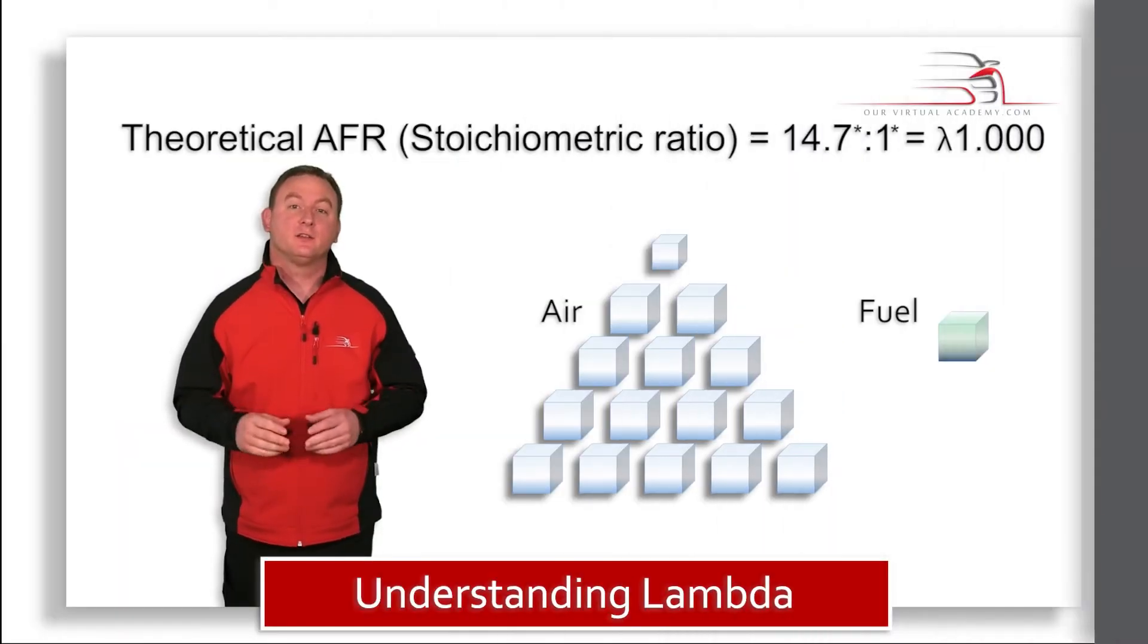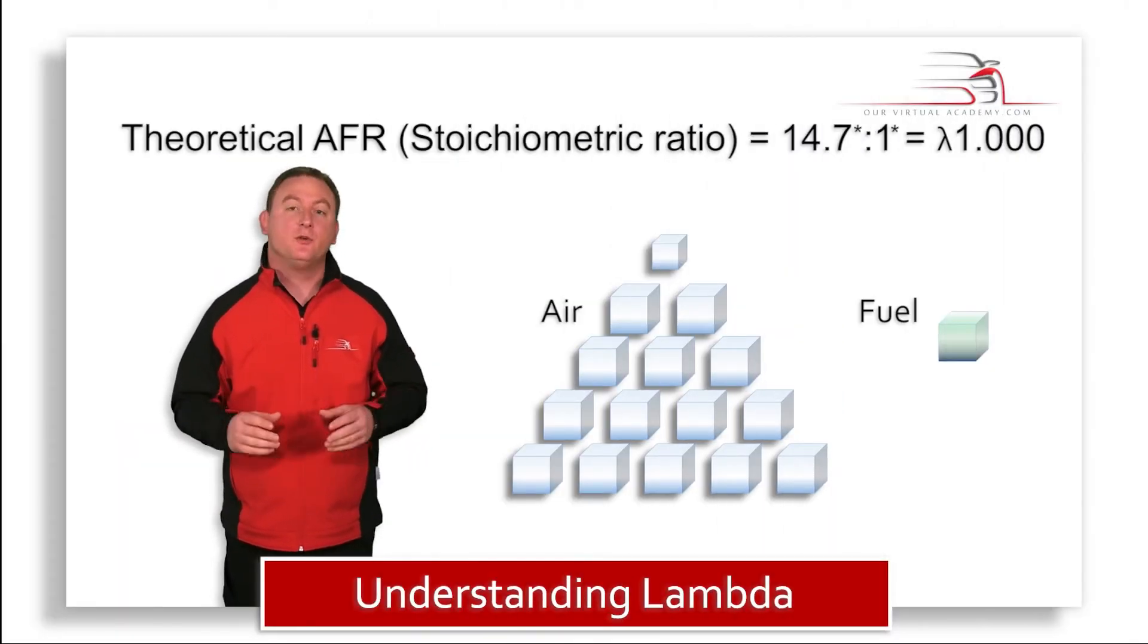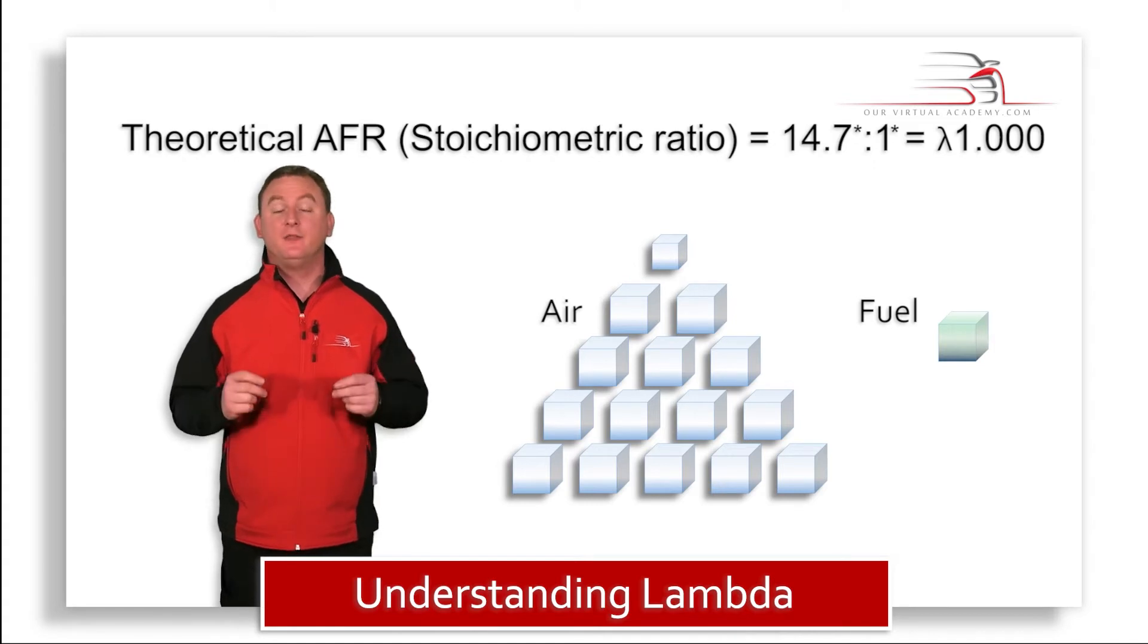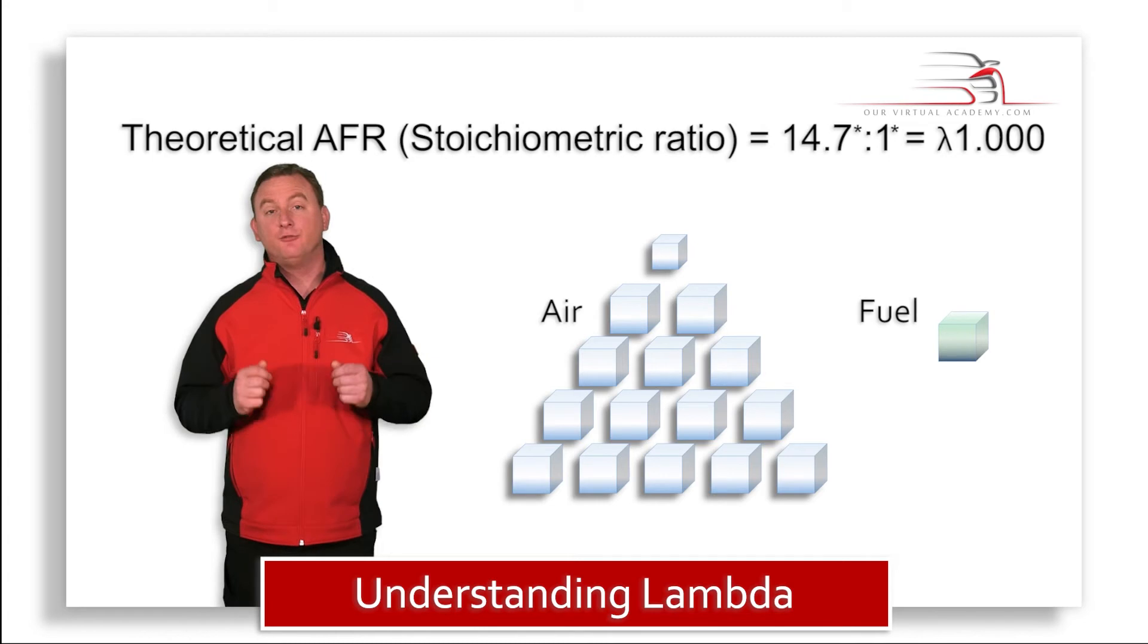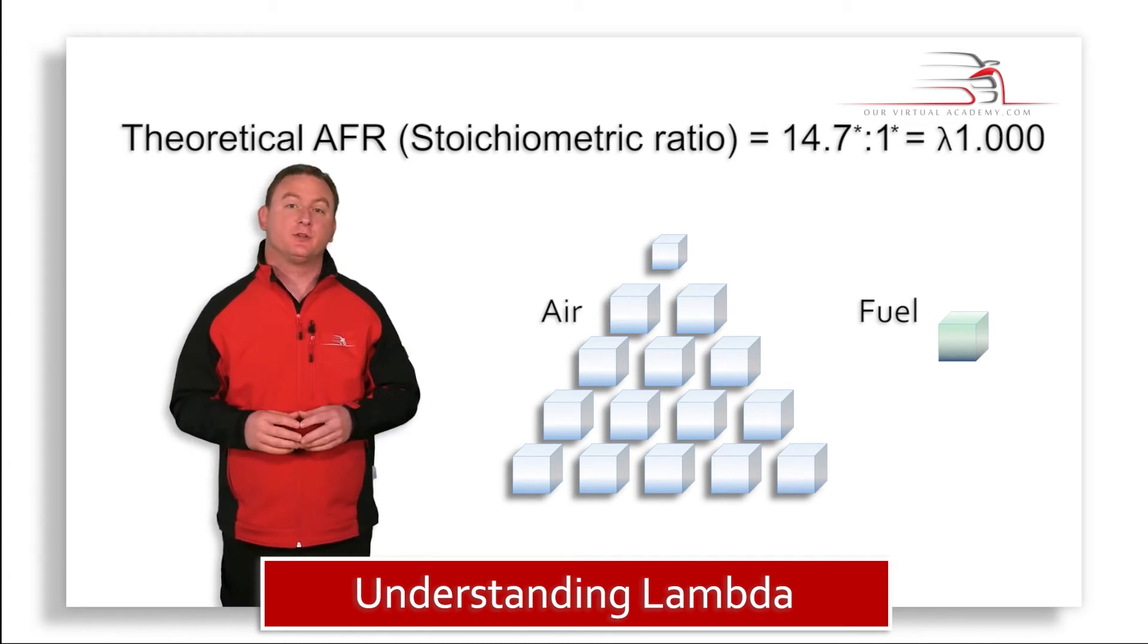The theoretical air fuel ratio is also known as the stoichiometric ratio, and this is the term given to the ratio being chemically correct. For petrol engines, the stoichiometric ratio is 14.7 to 1.